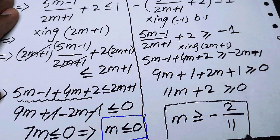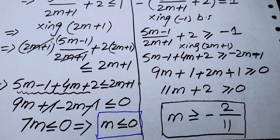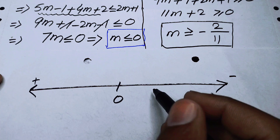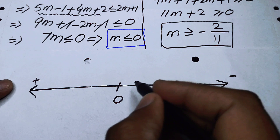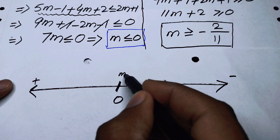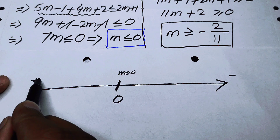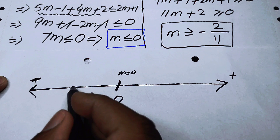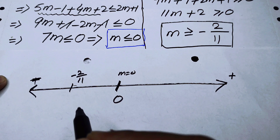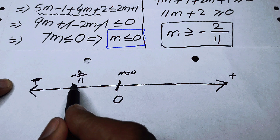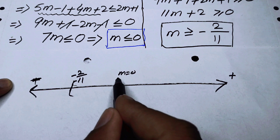Now we draw these values on the real number line. We have two values: m = 0 and m = −2/11. Zero is in the center, and −2/11 lies on the negative side. The set of values satisfying the inequality lies in the closed interval between these two points.